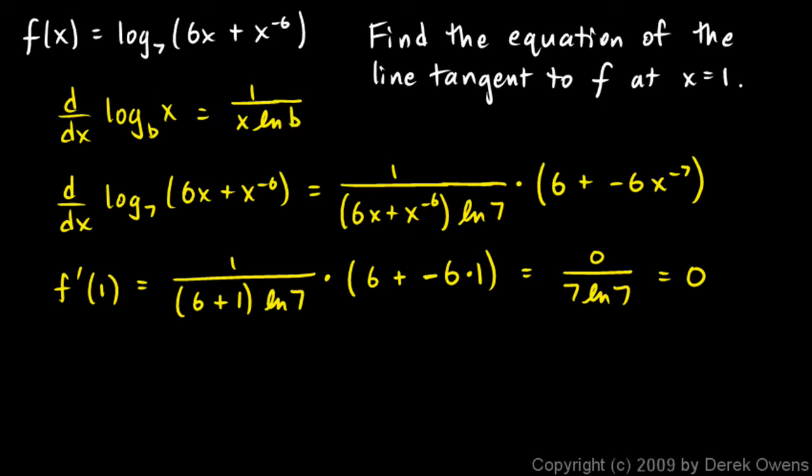So if we want to find the equation of the line, we just need to find the y value at that point. So we also need to find not f prime of 1, but also f of 1. So the value of the function, and in this case the numbers work out pretty nicely, it ends up being pretty easy. This is just going to be log base 7 of 6 times 1 plus 1 to the negative 6. I'm just plugging in a 1 for x in the original function to find f of 1.